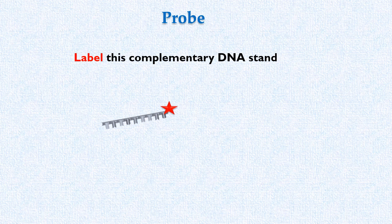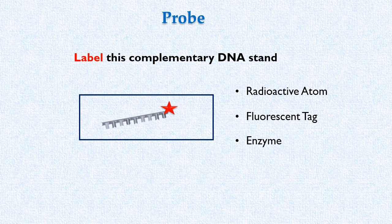Now, the label can be a radioactive atom, a fluorescent tag, or an enzyme. So this labeled DNA is the probe in our example.